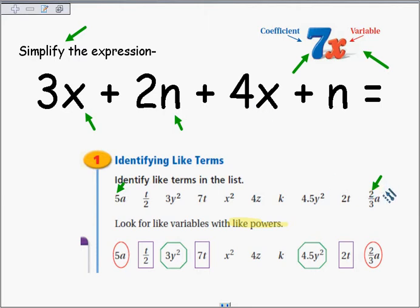The variable is the a, and they're like terms, because they're identical letters. And they're raised to the same power, even though there's no power listed. They'd be raised to the first power. So 5a and 2 thirds times a are like terms.